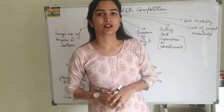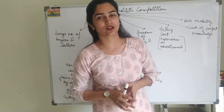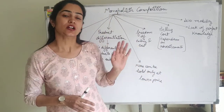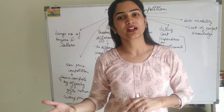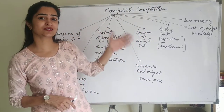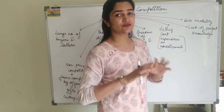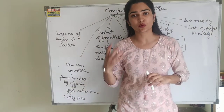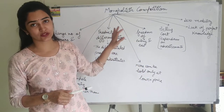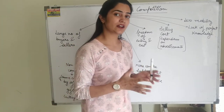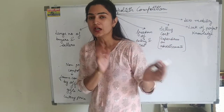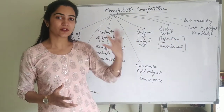Today we are going to start the next topic, continuing the chapter on market. We are going to start the new market — monopolistic competition. This is the third form of market, and the market we are dealing with most in today's world is monopolistic competition. There are large number of buyers and sellers, and monopolistic competition is somewhat a mixture of perfect competition and monopoly.